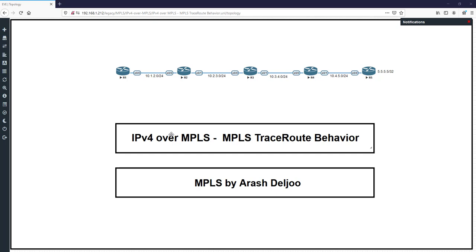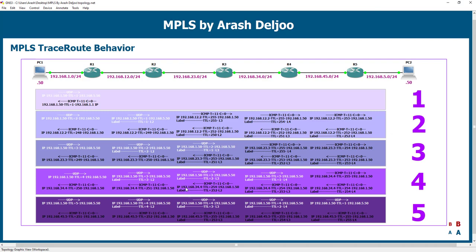We can use this picture for understanding the MPLS traceroute behavior. In this scenario we have five routers: R1, R2, R3, R4, R5, and also two PCs: PC1 and PC2. Assume that in PC1 I type traceroute and then the IP address of PC2, 192.168.5.50. I want to show you what is happening now.